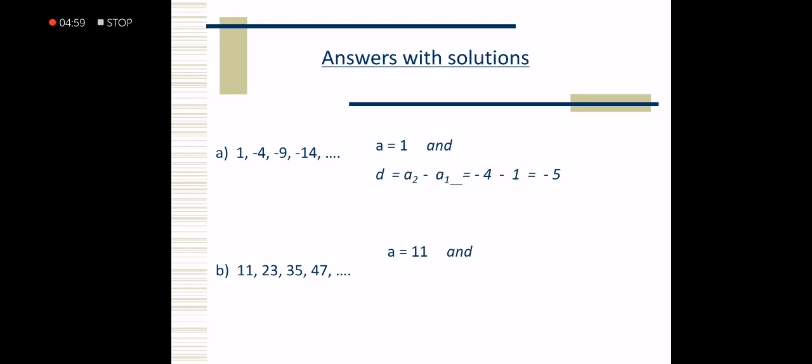Next is 11, 23, 35, 47. The first term is 11 and our common difference is a sub 2 minus a sub 1, which is 23 minus 11, which equals 12.